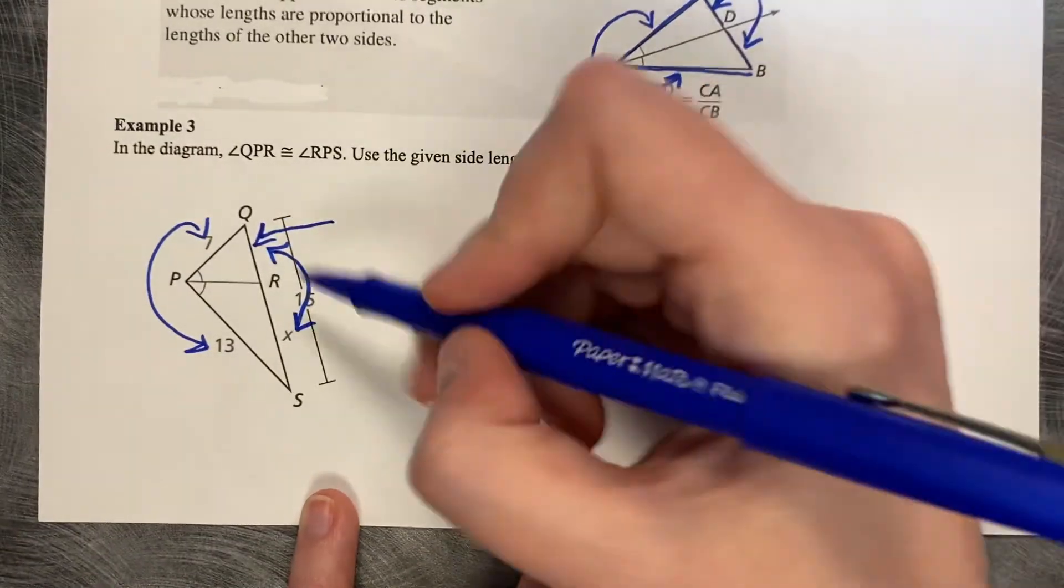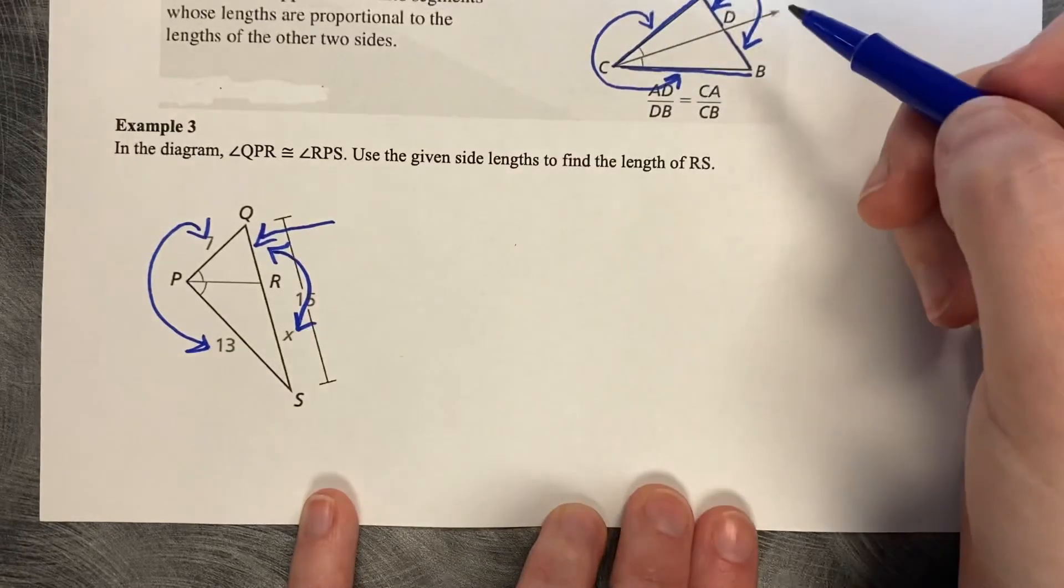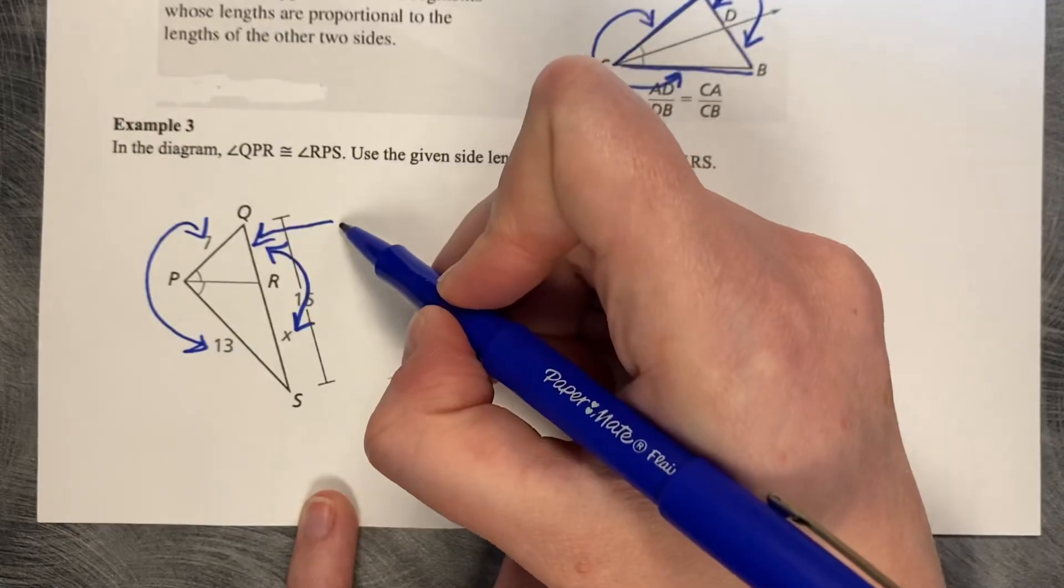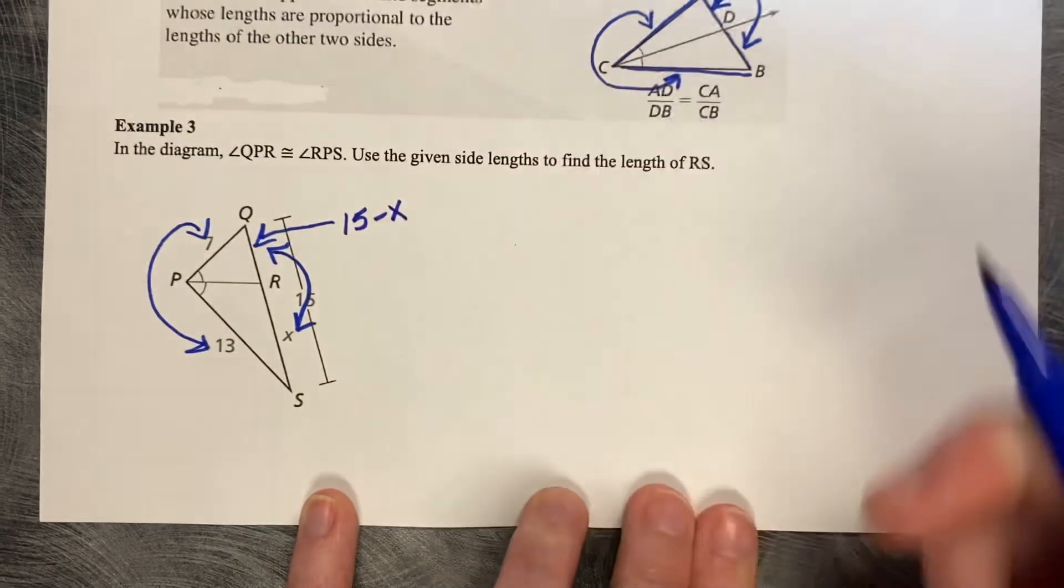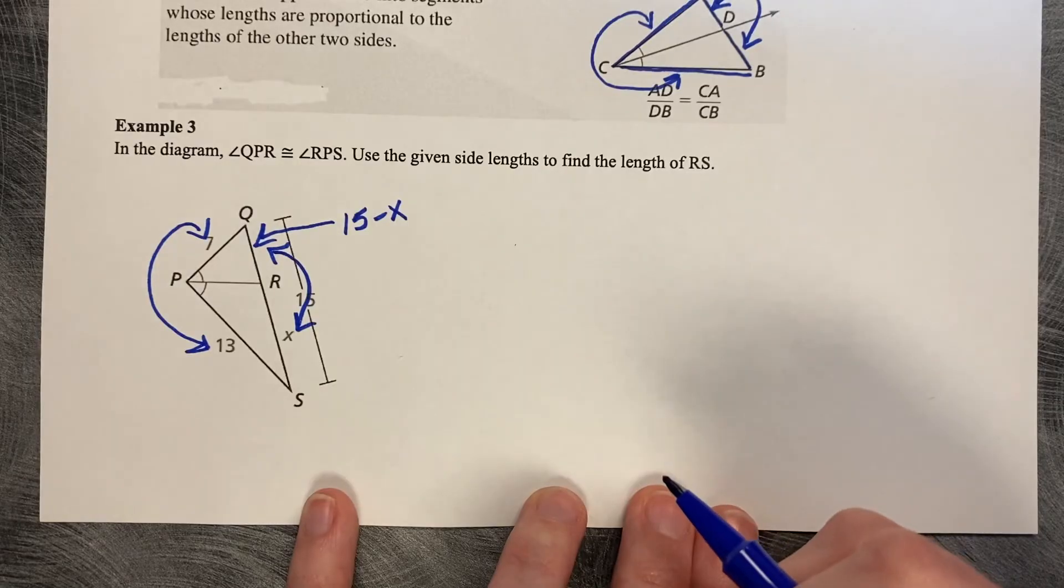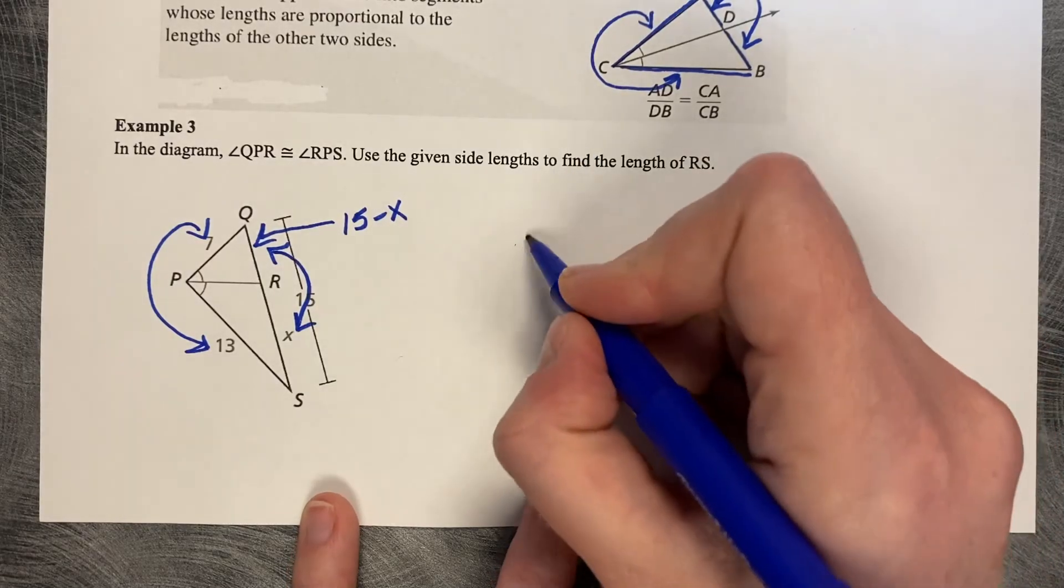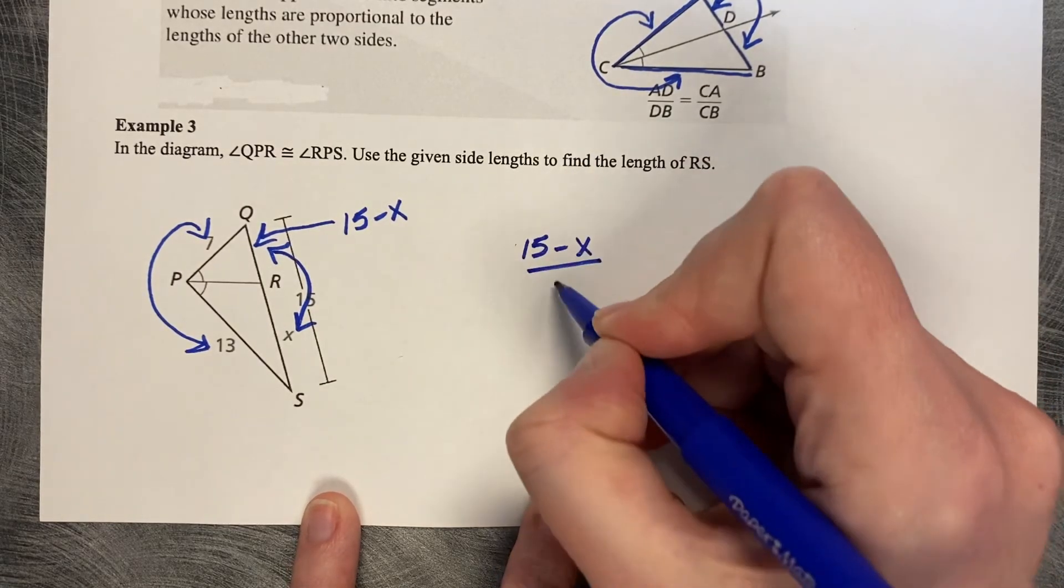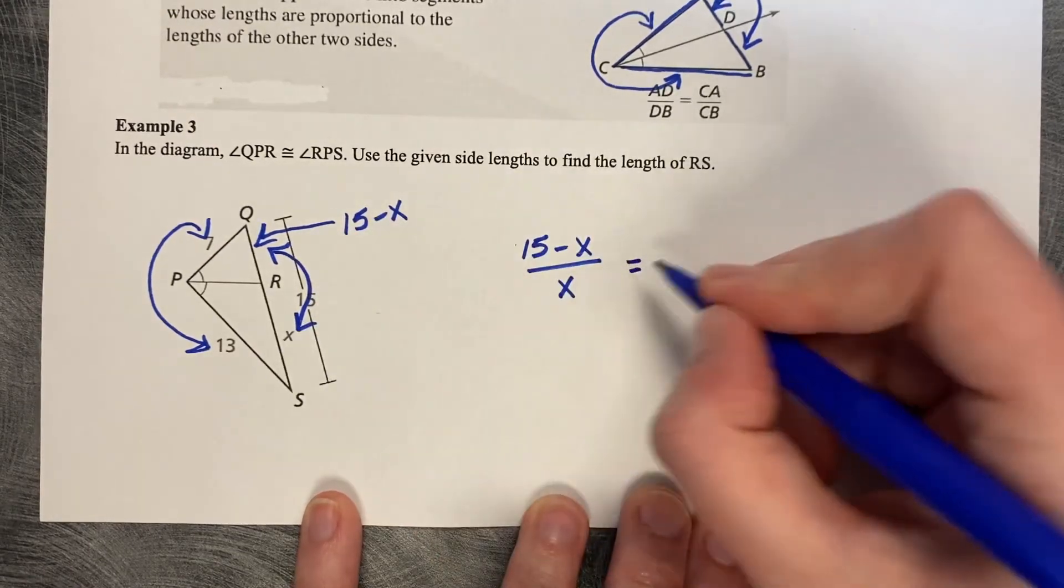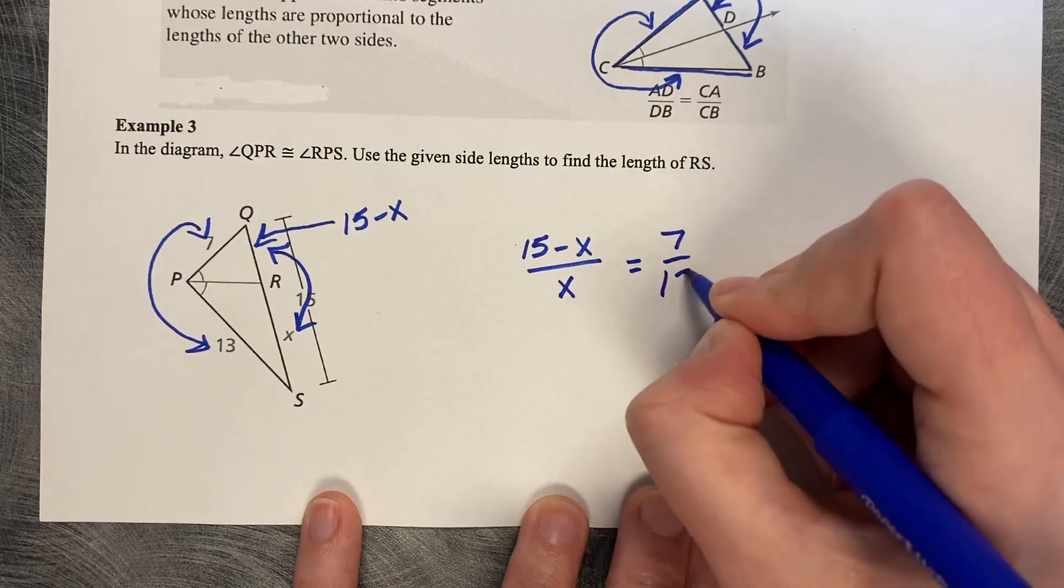The trick to writing the length of QR is to use this whole length of 15 and subtract away the chunk that's next to it. So this is really 15 minus X, some chunk of 15. So now we can say 15 minus X is compared to X, those two side lengths, as 7 is compared to 13.